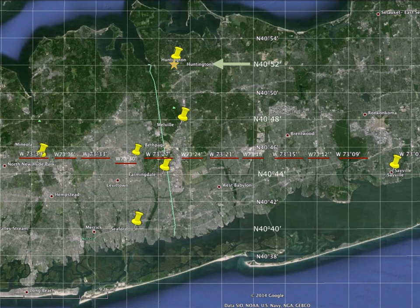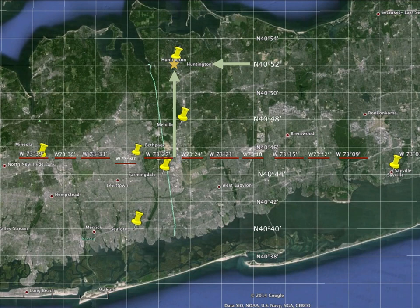Huntington's latitude is 40 degrees 52 minutes north of the equator. So therefore we're almost all the way to 41 degrees north — 52 minutes into a program would be almost all the way, so in this case for distance we're almost all the way to 41. Our longitude falls somewhere between 73 degrees 24 minutes west and 73 degrees 27 minutes west. So Huntington's longitude is about 73 degrees 25 minutes west, meaning it's about a quarter of the way between 73 and 74 degrees west.